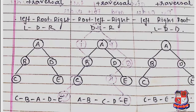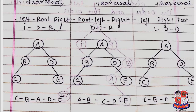Post-order traversal follows the rule: left, right, root. We traverse the root node last. Starting from A, we go directly to the leftmost node. We consider C as the first position.